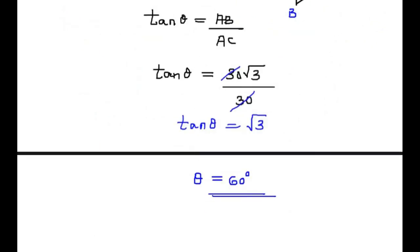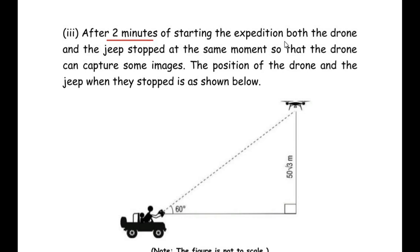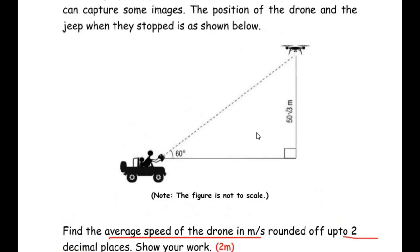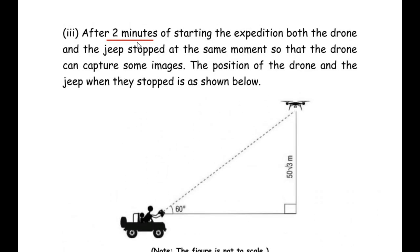Now let us move on to the third sub-question. After two minutes of starting the expedition, both the drone and the jeep stopped at the same moment so that the drone can capture some images. The position of the drone and the jeep when they stopped is as shown. Find the average speed of the drone in meters per second, rounded off to two decimal places. Show your work. This is for two marks. After two minutes both the jeep and the drone halt, and the drone captures images.